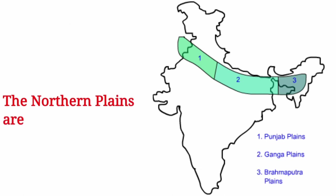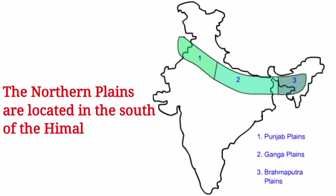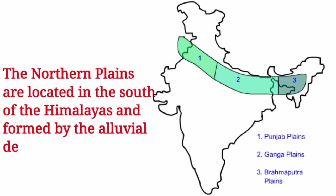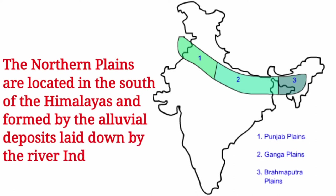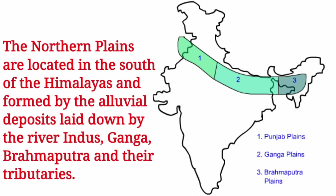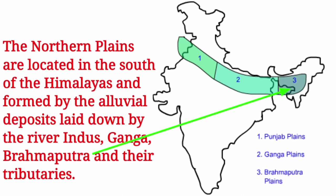The northern plains are located in the south of the Himalayas. Northern plains are formed from alluvial deposits brought by the rivers Indus, Ganga, Brahmaputra, and their tributaries.